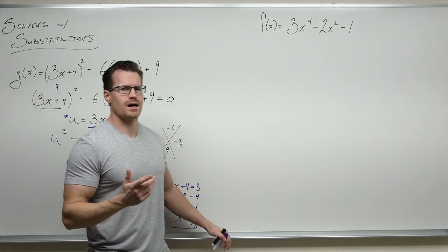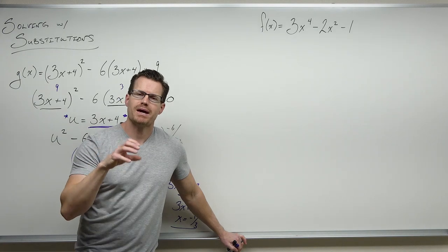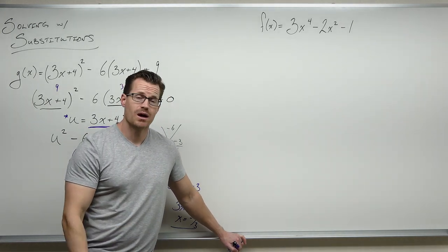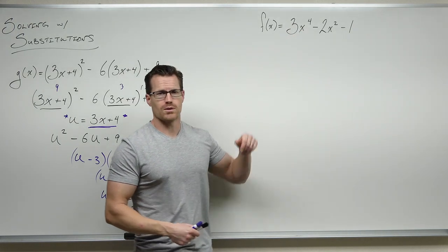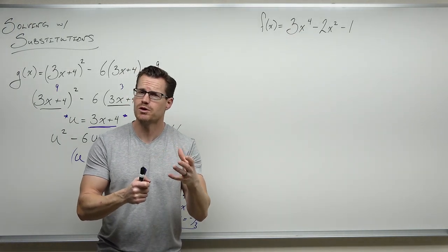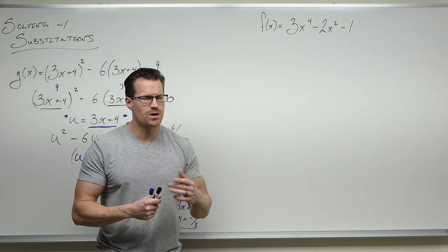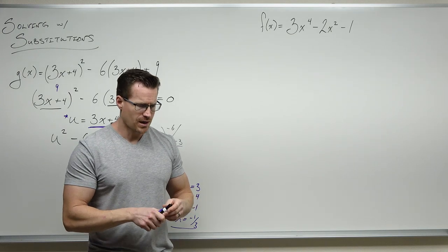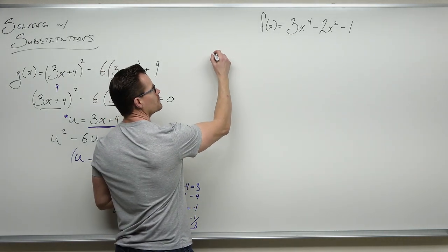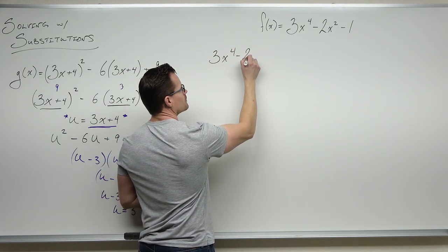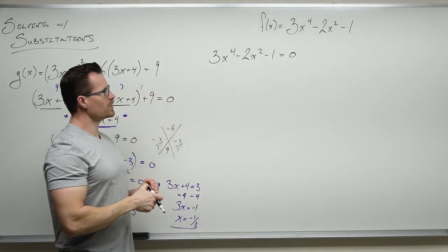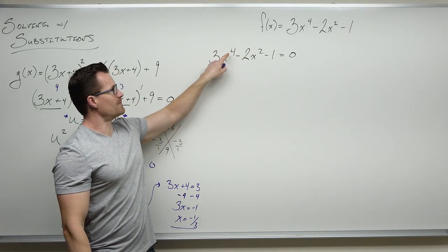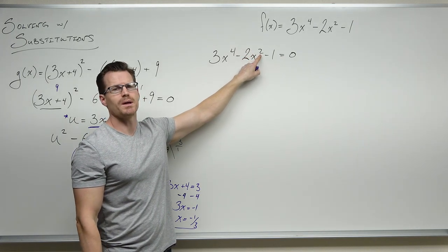Moving on to the next example with f(x). We know right off the bat this is not a quadratic. We're going to use the same idea to make it into a quadratic with another variable. If we're asked to find x-intercepts, we'll probably have four solutions somehow — some could be complex, but in general we'll try to find that many solutions of our polynomial. So we set this equal to zero.